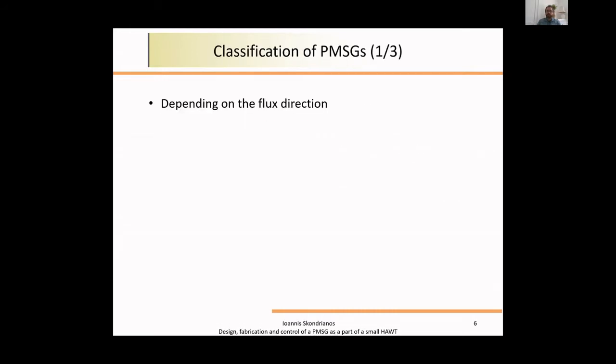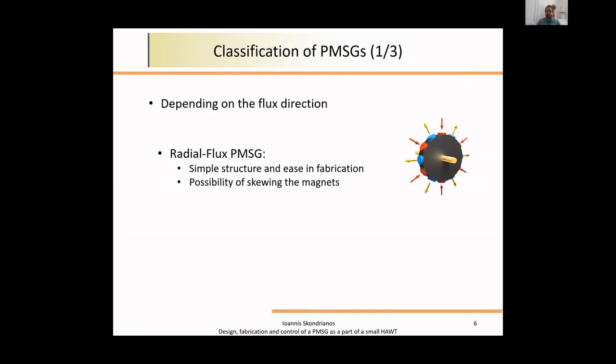Let's see the classification of these machines. Depending on the flux direction, we have two types of permanent magnet synchronous generators. The radial flux machine, characterized by simple structure and ease in fabrication. On the other hand, the axial flux machine has short axial length and greater flux leakage, much more difficult to fabricate than the previous one.